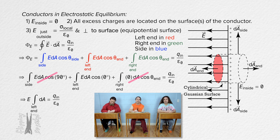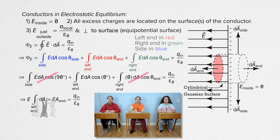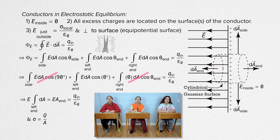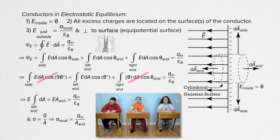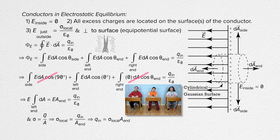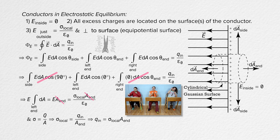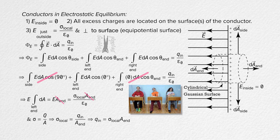The integral of dA for just the left end is just the area of one end of the Gaussian cylinder. We know surface charge density equals charge over area, which means the local surface charge density equals the charge inside the Gaussian cylinder over the area of one end of the Gaussian cylinder. That means the charge inside the Gaussian cylinder equals local surface charge density times the area of one end. Substituting that in, the area of the end of the Gaussian cylinder cancels, and the electric field just outside a conductor in electrostatic equilibrium equals the surface charge density at that location divided by the permittivity of free space.